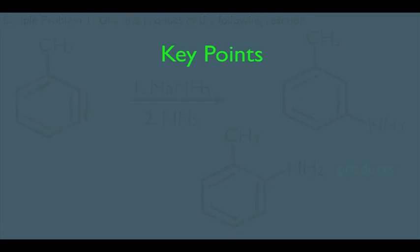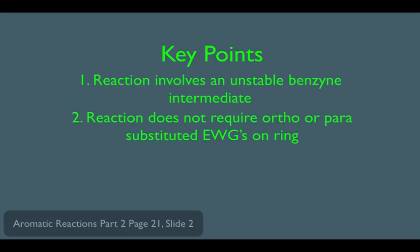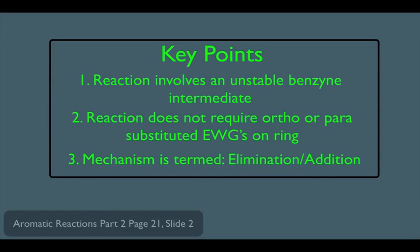So what have we learned here? Key points. Number one, we saw that the reaction involves an unstable benzyne intermediate. That's how this reaction got its name. We also saw number two, that the reaction does not require ortho or para substituted electron withdrawing groups on the ring, such as in the normal nucleophilic aromatic substitution reaction, which we talked about in another online lecture. And number three, the mechanism is termed elimination addition. Remember this helps us recall the mechanism if we happen to forget how it goes down.